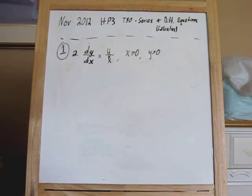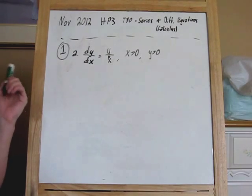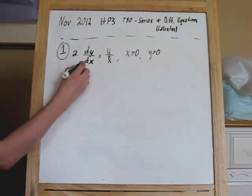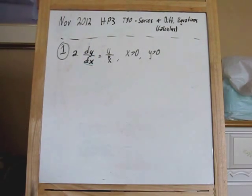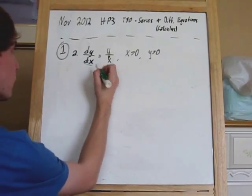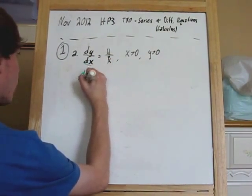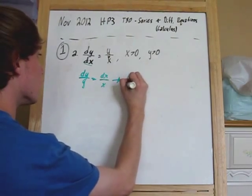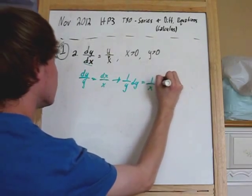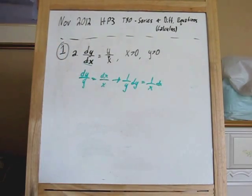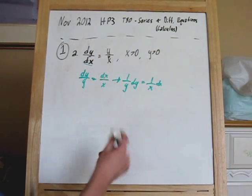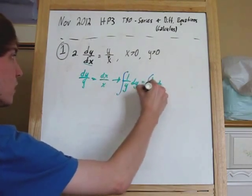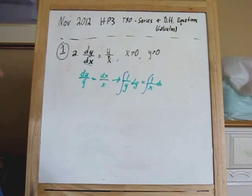Part A asks to solve the equation through the separation of variables. In terms of a separable differential equation, this is pretty much as easy as it gets. We're just going to multiply both sides by dx and divide both sides by y to get all of our variables on one side. What we get is dy over y is equal to dx over x, or equivalently 1 over y dy equals 1 over x dx. Now that we have both variables on their own side, we can just integrate.